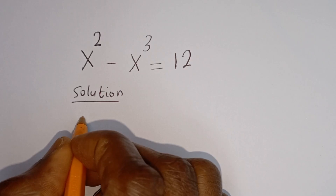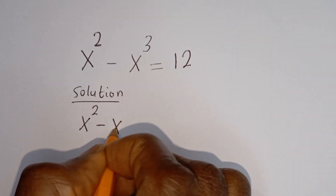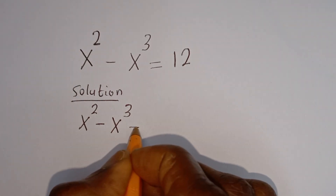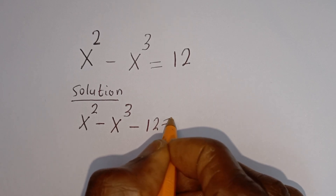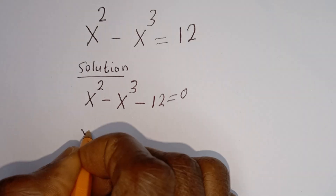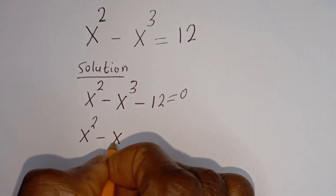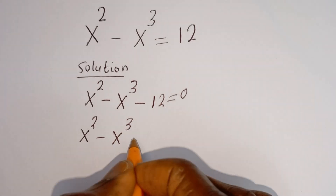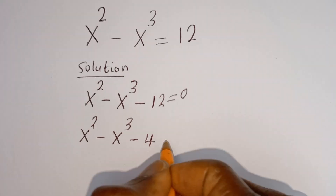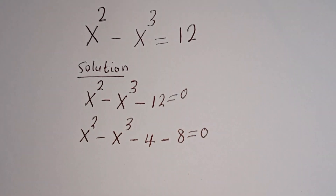Here we have S squared minus S to the power of 3. If we take this 12 to this side, it becomes minus 12 is equal to 0. We have S squared minus S to the power of 3. This minus 12 can be written as minus 4 minus 8, equal to 0.